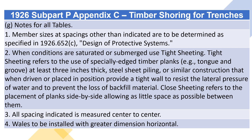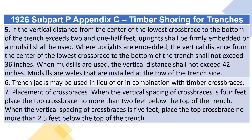3. All spacing indicated is measured center to center. 4. Whales to be installed with greater dimension horizontal. 5. If the vertical distance from the center of the lowest crossbrace to the bottom of the trench exceeds 2½ feet, uprights shall be firmly embedded, or a mudsill shall be used. Where uprights are embedded, the vertical distance from the center of the lowest crossbrace to the bottom of the trench shall not exceed 36 inches. When mudsills are used, the vertical distance shall not exceed 42 inches. Mudsills are whales that are installed at the toe of the trench side. 6. Trench jacks may be used in lieu of or in combination with timber crossbraces.